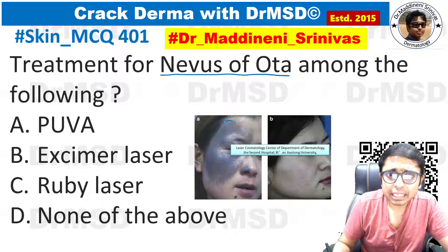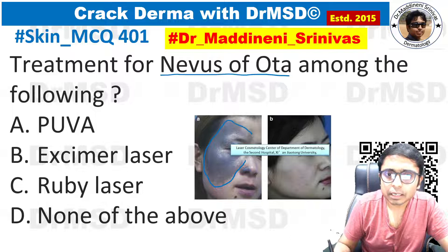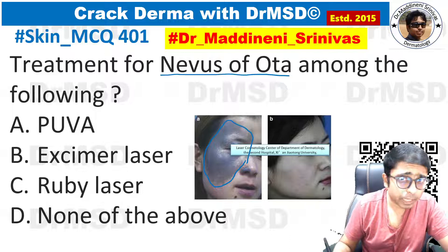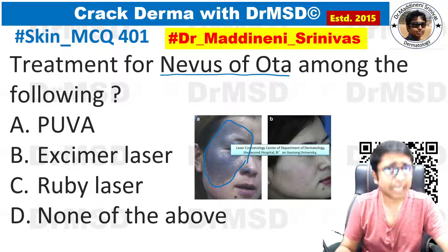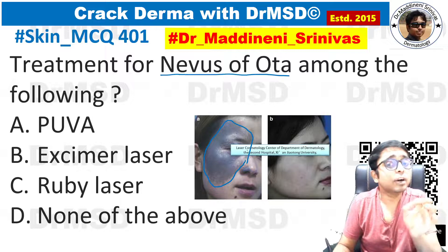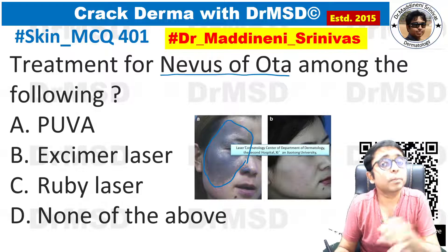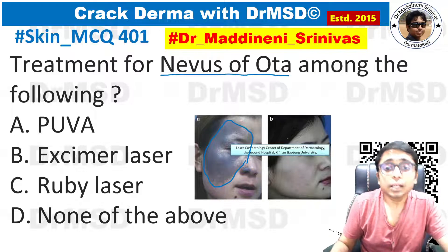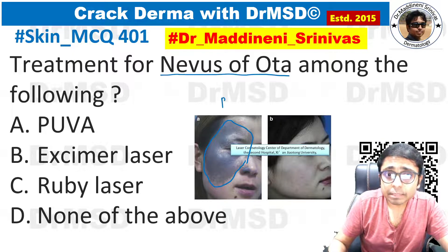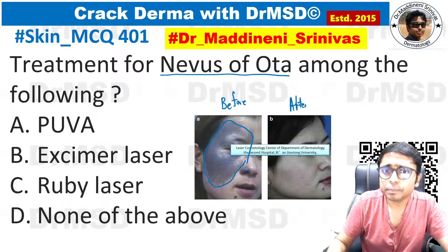You can see here the patient is having bluish pigmentation present over the face unilaterally, and if you observe the sclera, they will also be blue in colour. This is a before picture of this patient.